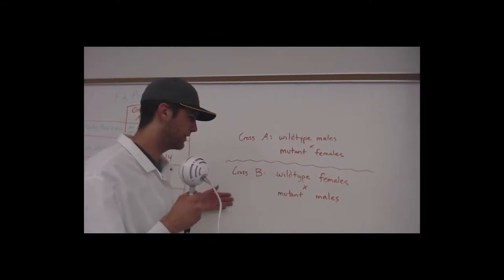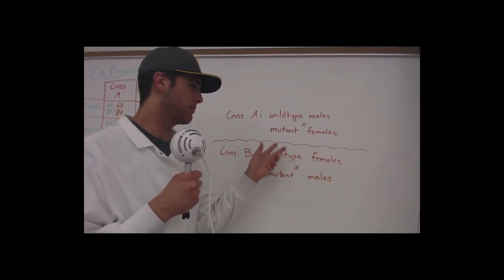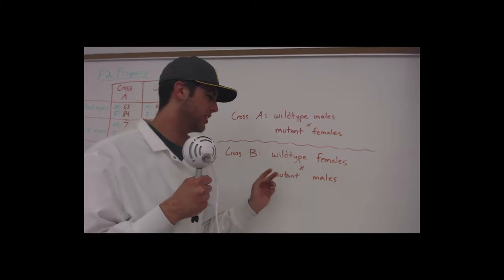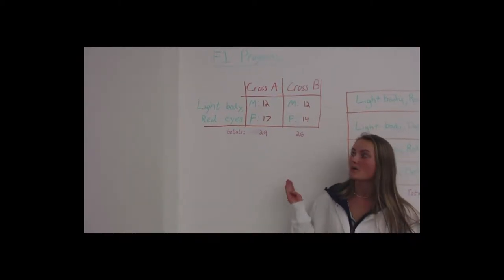Okay, so from those mutant flies and wild type flies, we set up Cross A and Cross B. Cross A is our wild type males and our mutant females, and our Cross B is our wild type females with our mutant males. So after our parental cross we observed the F1 progeny.